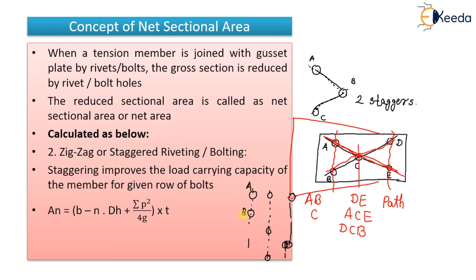Let us assume points A, B, C, D, E, F, and G. How many paths are possible? Take all chain paths first: A-B is the first path, C-D-E is the second path, F-G is the third path. Then consider diagonal paths: A-B-D-E is one path, A-B-D-G is another. Various paths are possible. For path A-B-D-E: from A to B there is no stagger, B to D is one stagger (diagonal), so there is one stagger total.